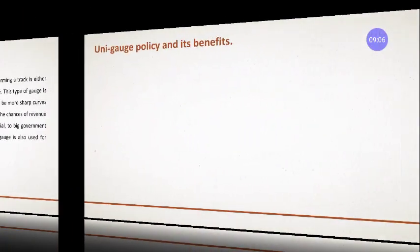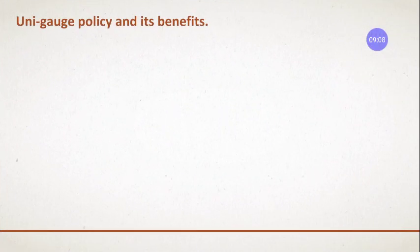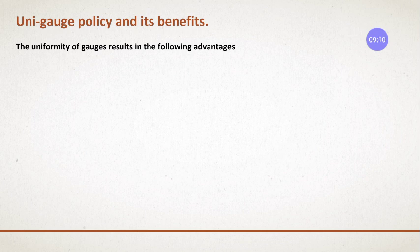These are the three types of gauges. Now, what is the unigage policy? Unigage policy means one gauge policy - we are going to provide only one gauge all over the country instead of three different types. That one gauge is broad gauge. Why? Because providing different gauges at different places creates problems.